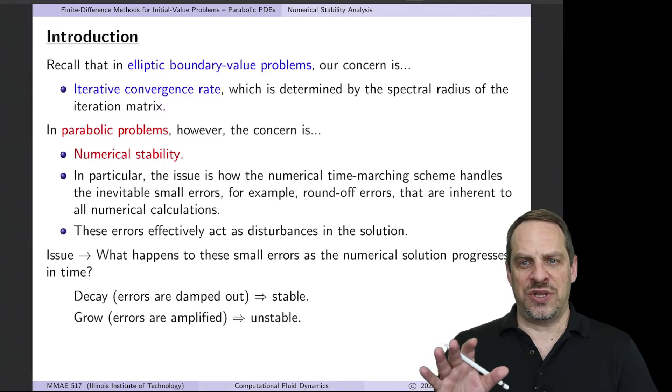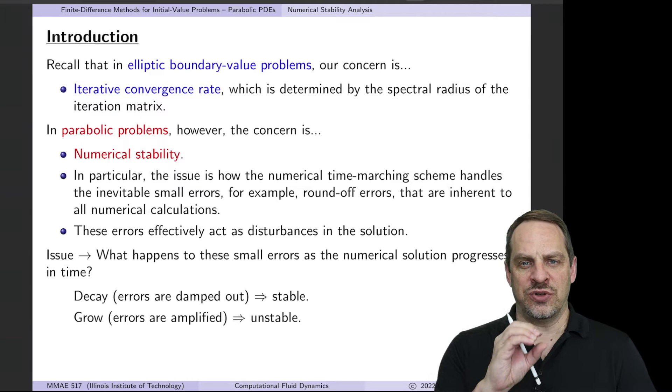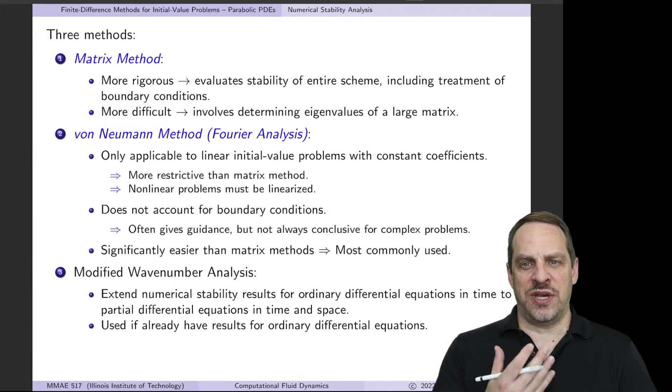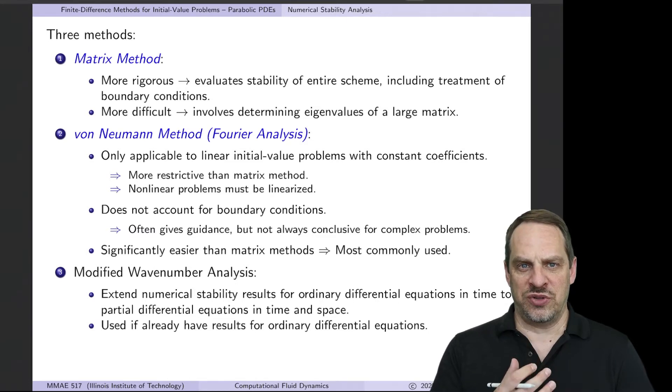There are three approaches to performing numerical stability analysis. Matrix methods are the most rigorous approach, because they evaluate the stability of every aspect of the scheme, including the treatment of boundary conditions. It's also the most difficult, because it involves calculating the eigenvalues of a very large matrix. So it's the most rigorous, but it's also the most difficult.